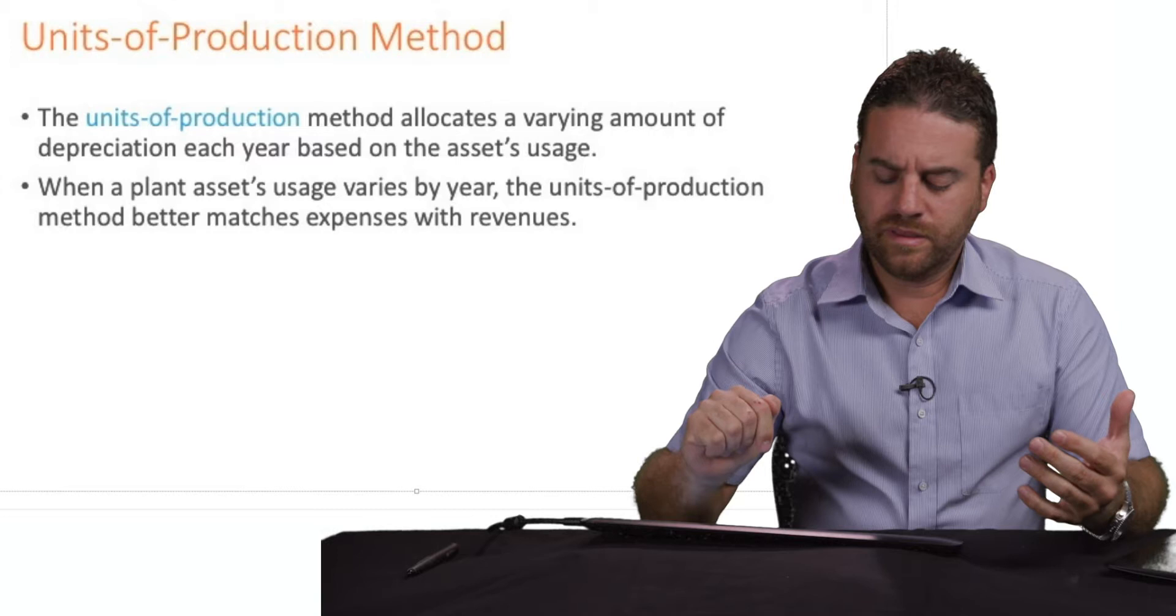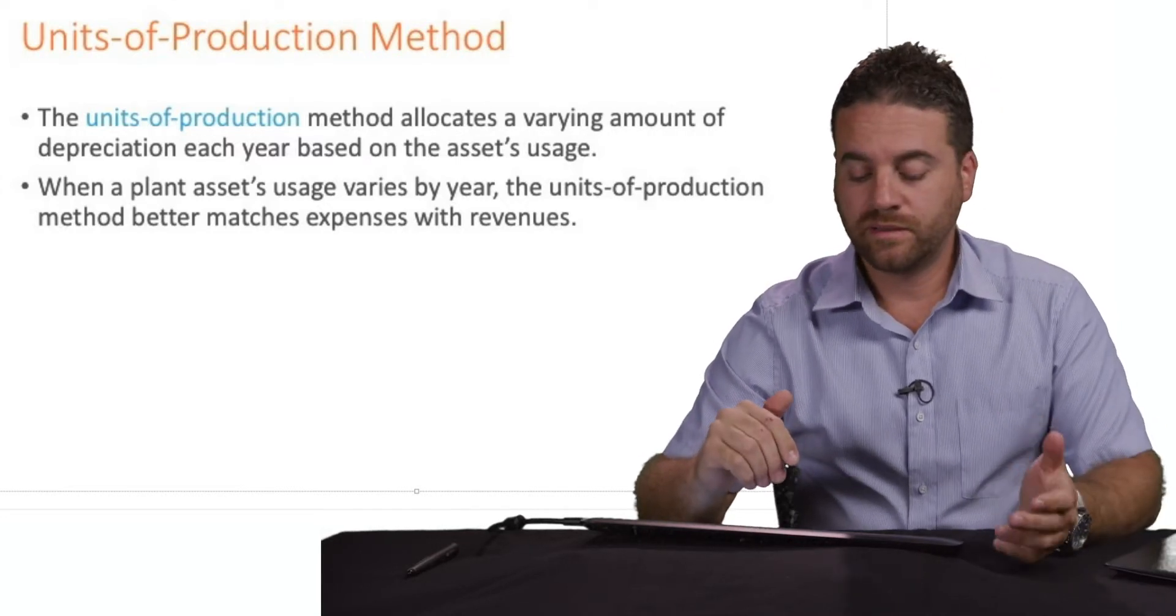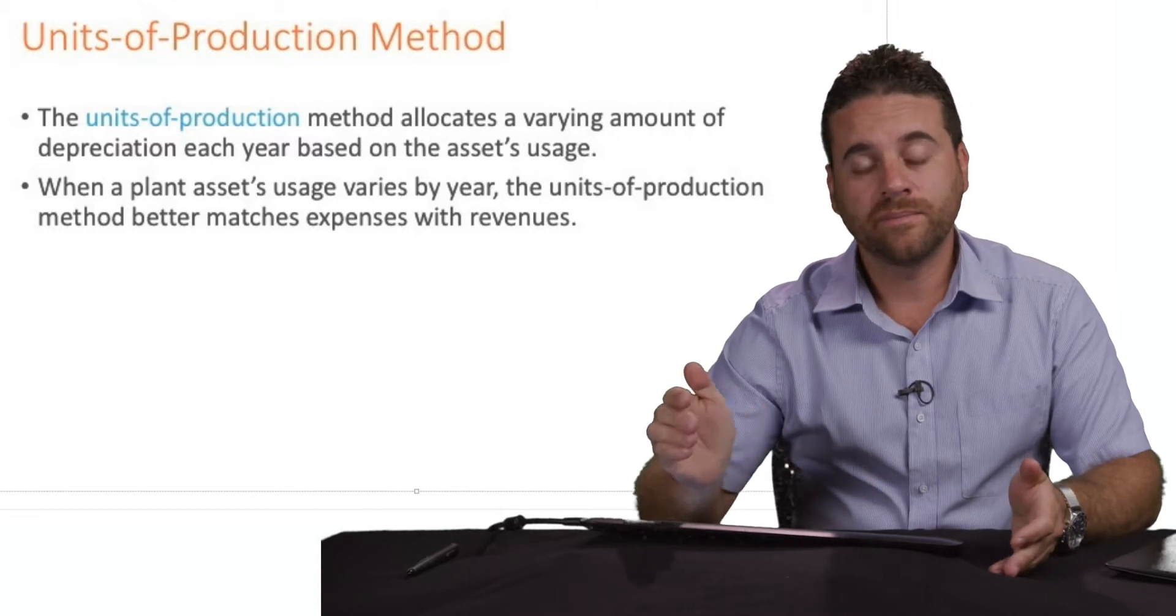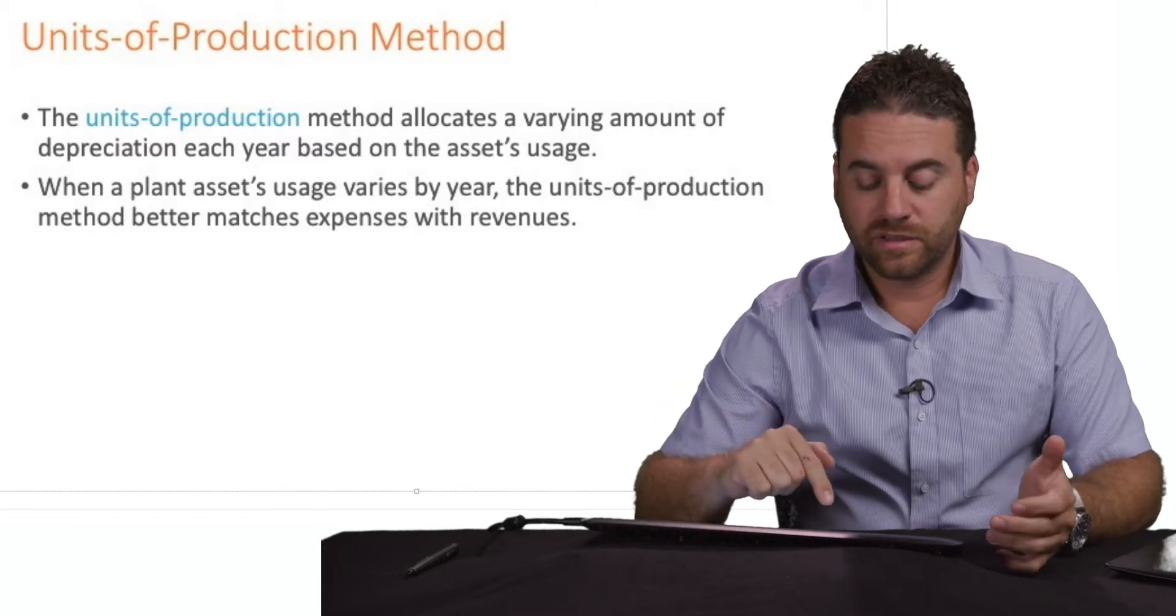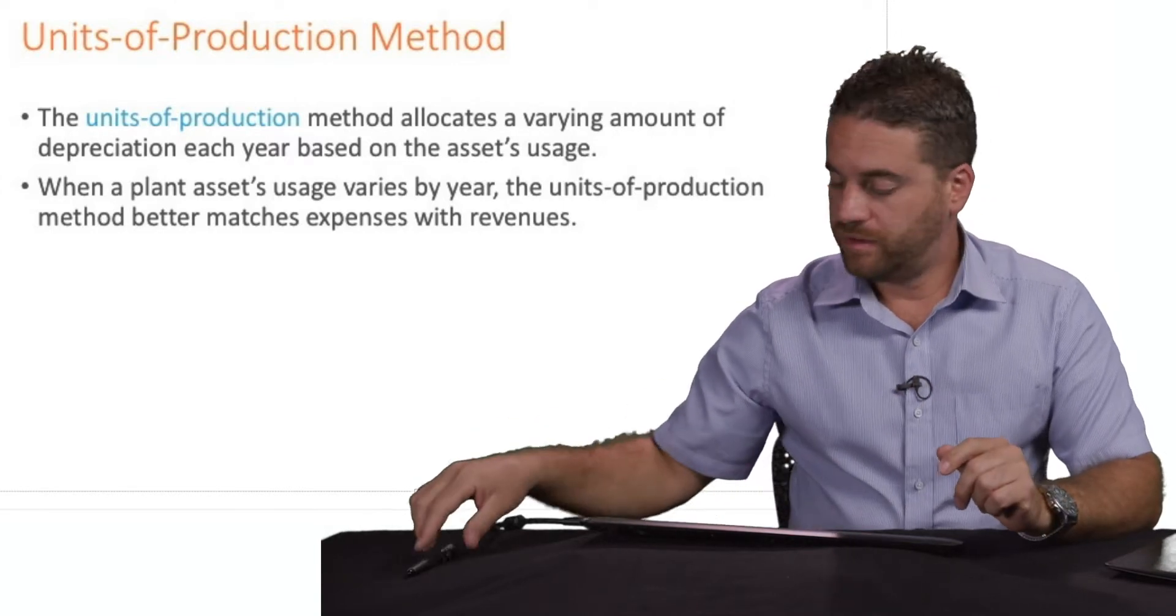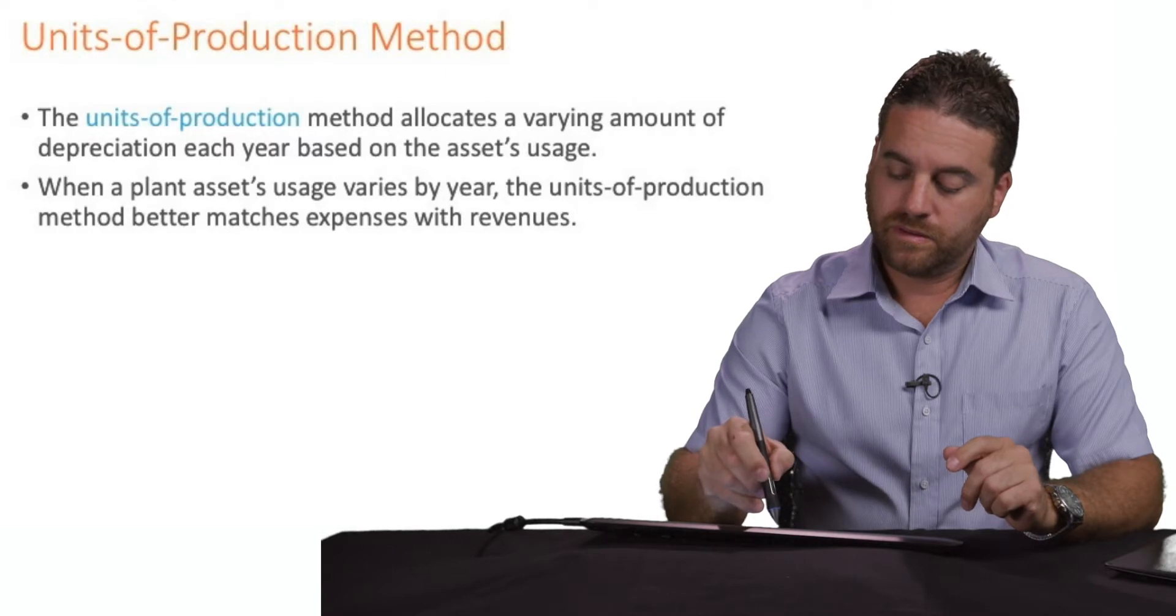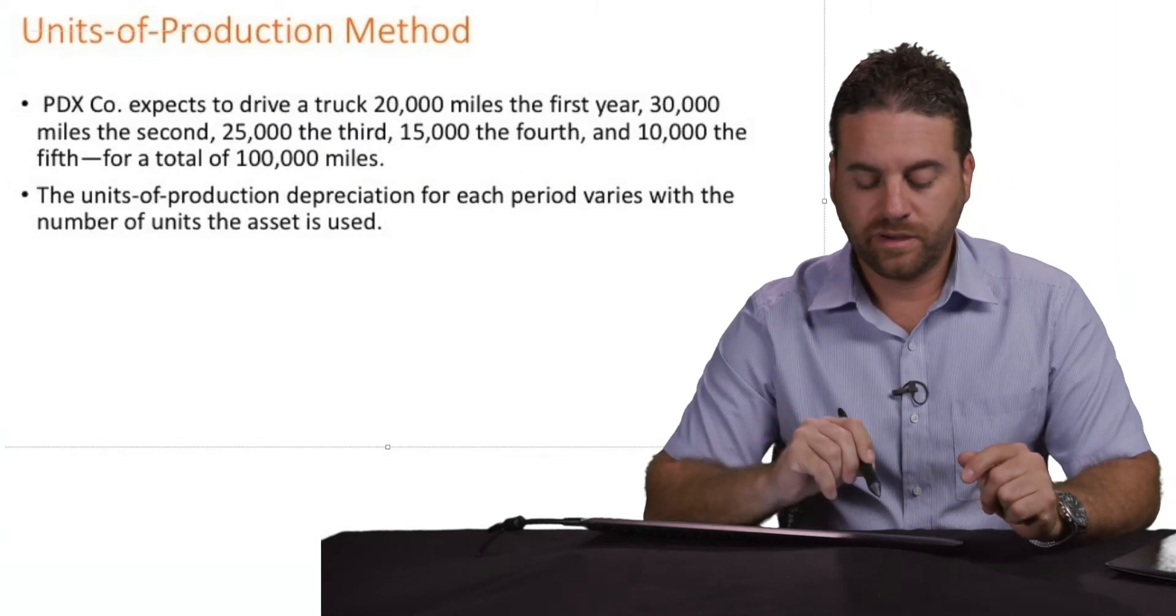So the information that needs to be given to us in order to be able to calculate the depreciation year after year using the units of production is the historical value. So let's have an example here.